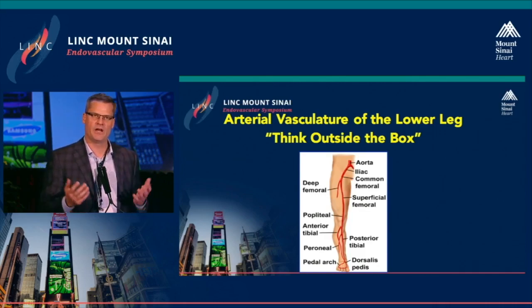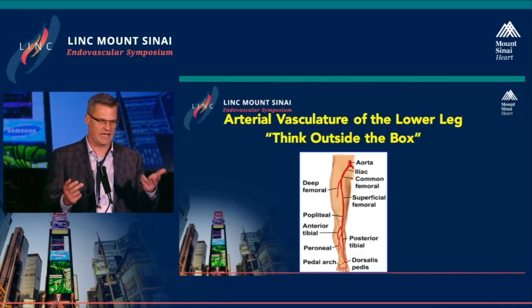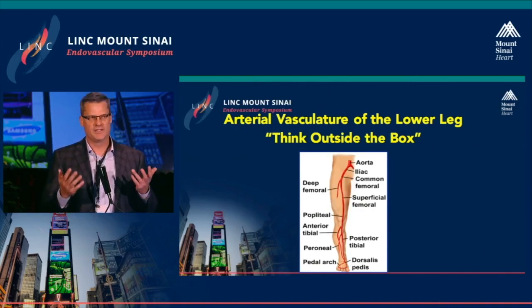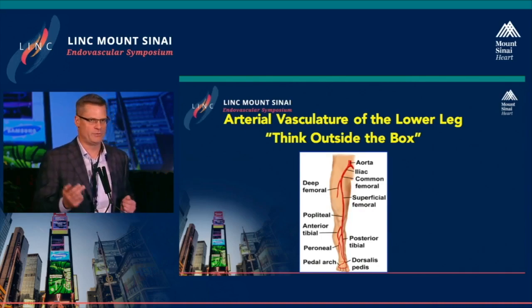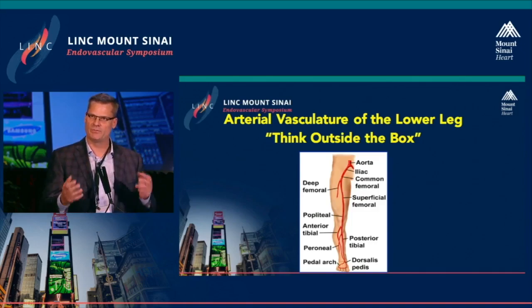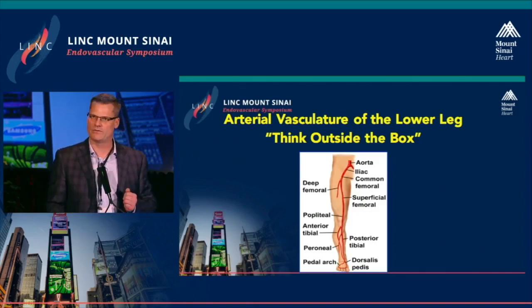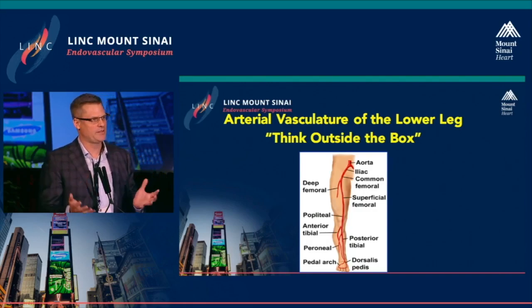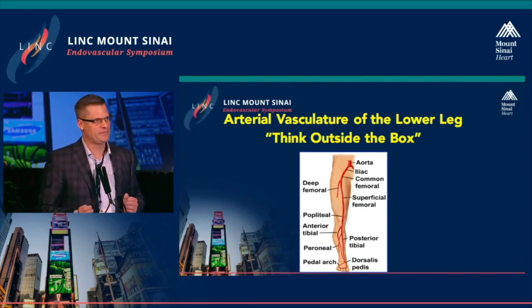I'll challenge everyone in the room to always think outside the box. We commonly see this slide of arterial vasculature — you don't just look at it as the superficial femoral, profunda, popliteal, and three tibial vessels. If you have a blockage in the superficial femoral, can you get through it in other directions? If you can't come antegrade or retrograde, can you come from a transcollateral? You've also got surals and geniculates that go around the popliteal, supplying the tibials from the SFA.